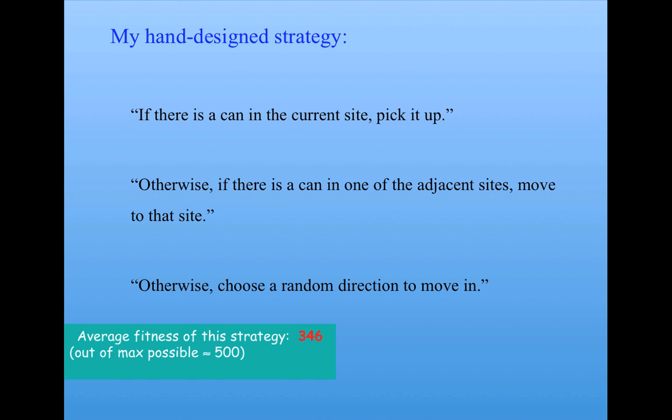Okay, so not too bad. But then I implemented the genetic algorithm and ran the genetic algorithm, just as I explained to you, and found that its average fitness of the best evolved strategy was 486. Almost perfect. So the question was, why is the genetic algorithm doing so much better than I am? What is its strategy doing that is so much better?